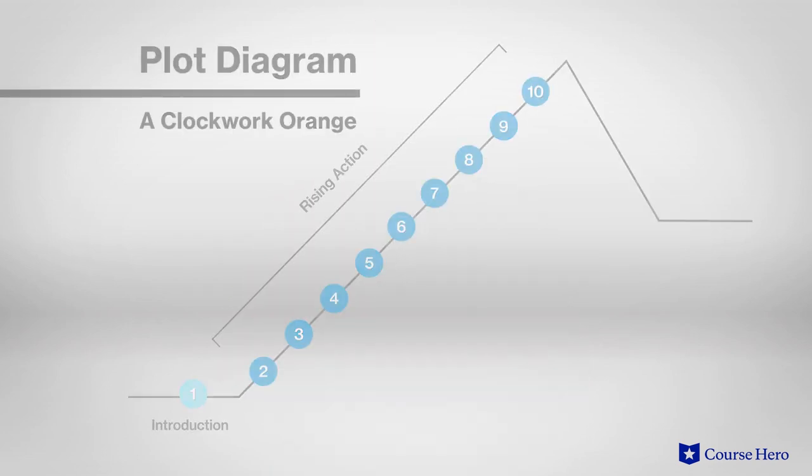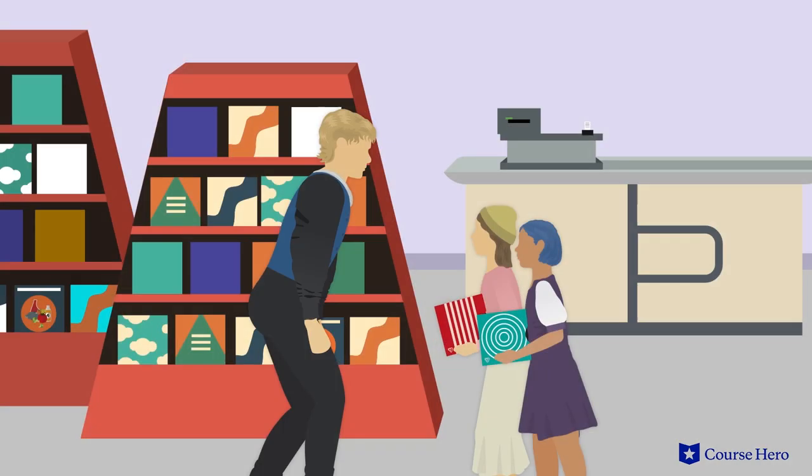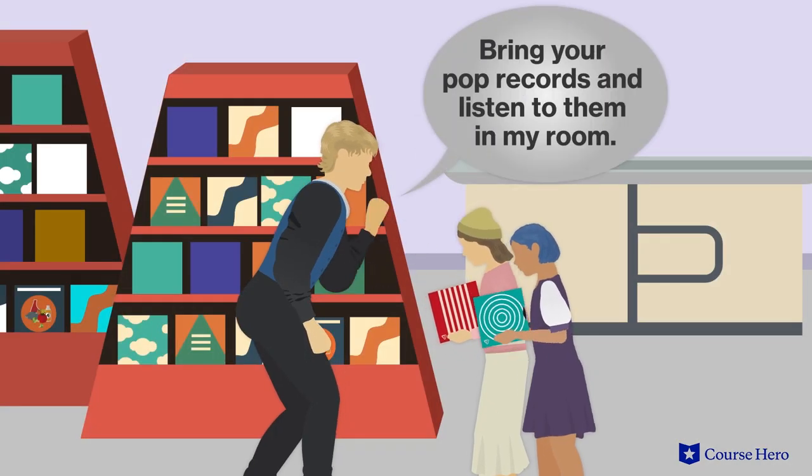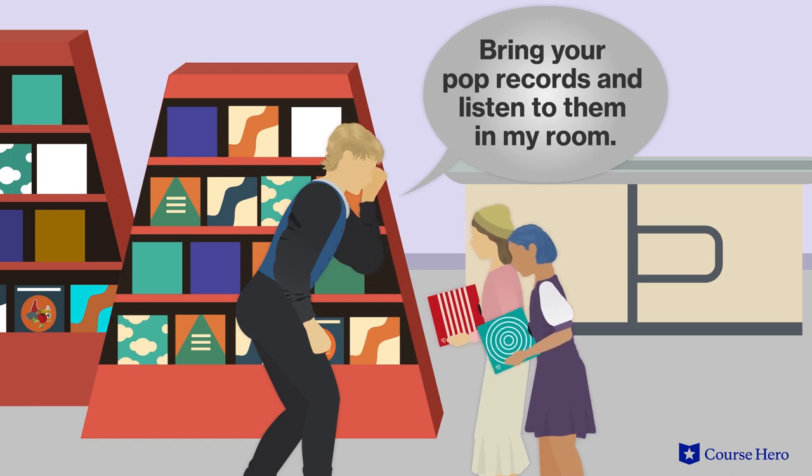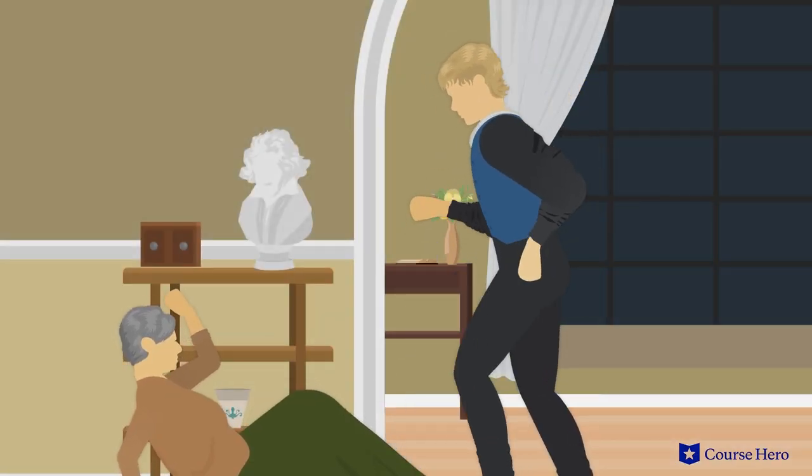In the rising action, the next day Alex skips school and goes instead to a record store for a recording of Beethoven's Ninth Symphony. He entices two 10-year-old girls back to his room and rapes them. When he wakes that evening, he leaves his parents flat to find his gang waiting. To placate Georgie, Alex agrees to rob an elderly woman's home.